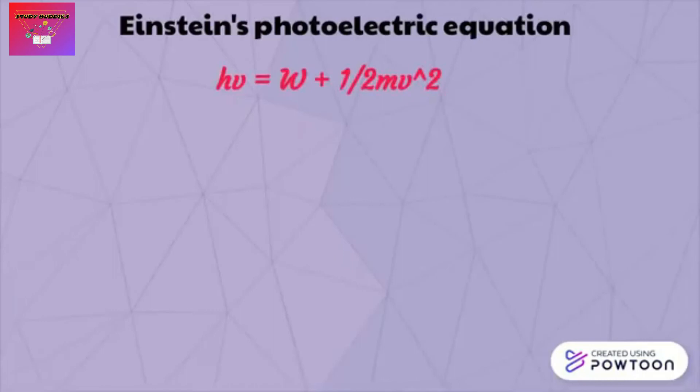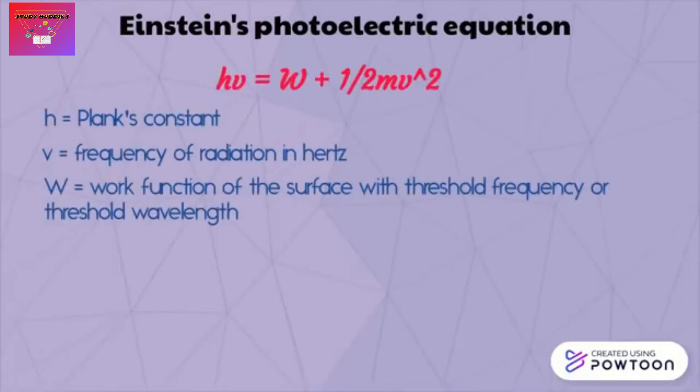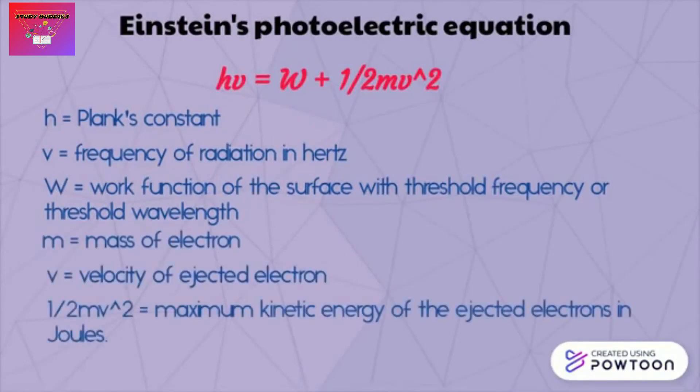This is Einstein's photoelectric equation where h refers to Planck's constant, v refers to the frequency of radiation in hertz, w is the work function of the surface with threshold frequency or threshold wavelength, m is the mass of electrons, v is the velocity of ejected electron, and finally one half mv square is the maximum kinetic energy of the ejected electrons in joules.